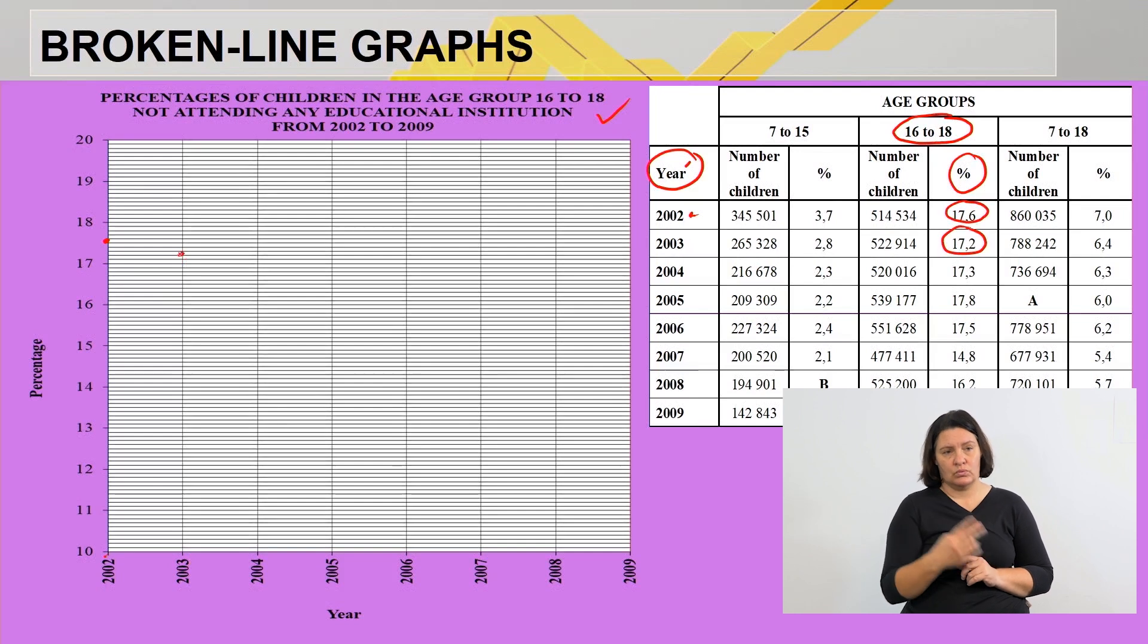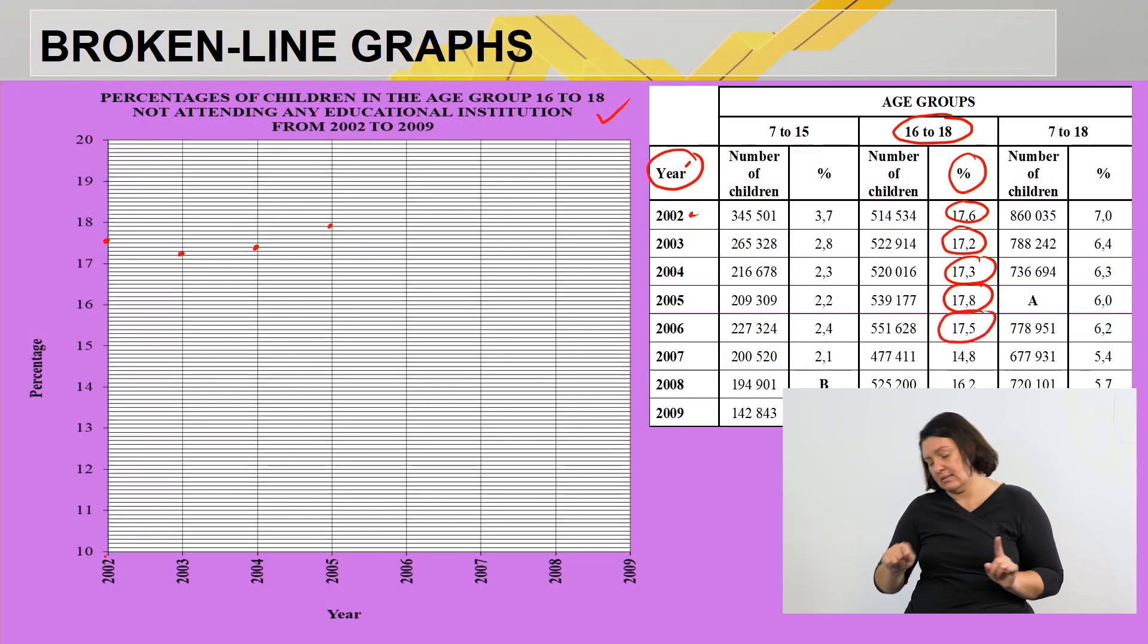2004, it was 17.3. So 2004, 17 is there, 1, 2, there's 17.3. Then 2005, I'm plotting all the points now. 2005 it was 17.8, so there is 17: 1, 2, 3, 4, 5, 6, 7, 8 is there, just below 17.9.